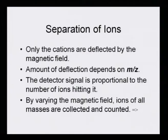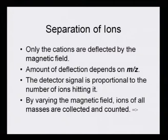The smallest particles generated through fragmentation reach the detector first. The detector signal is proportional to the number of ions hitting it — it is a very sensitive detector and the number of registries depends on the number of impacts. By varying the magnetic field, ions of all masses are gradually collected and counted.